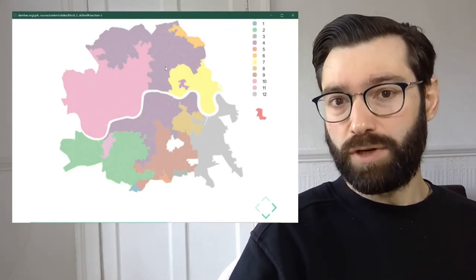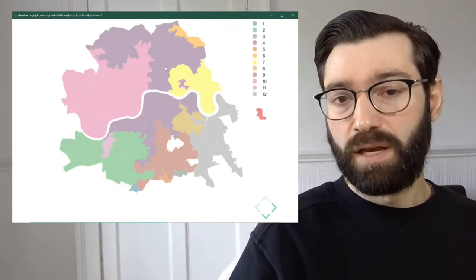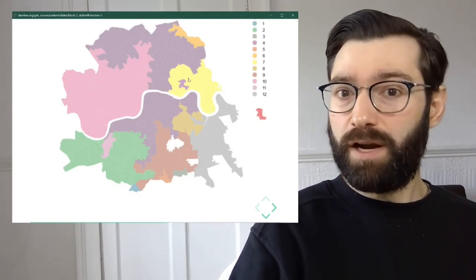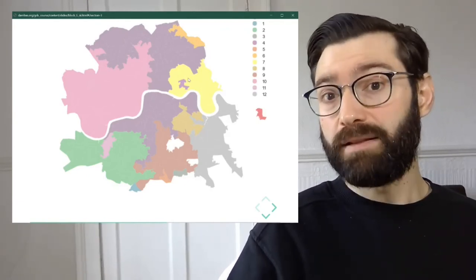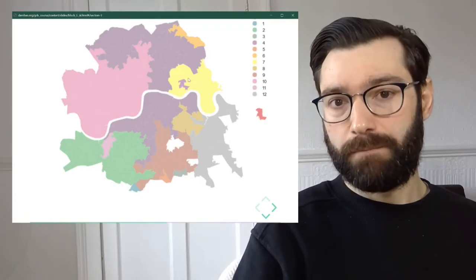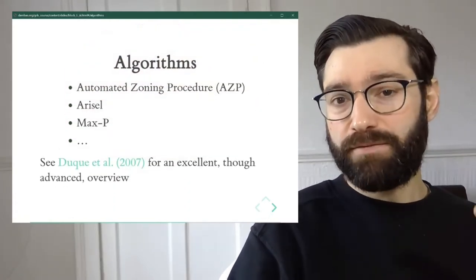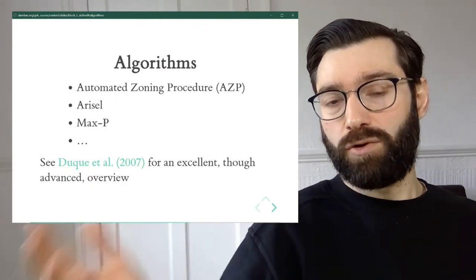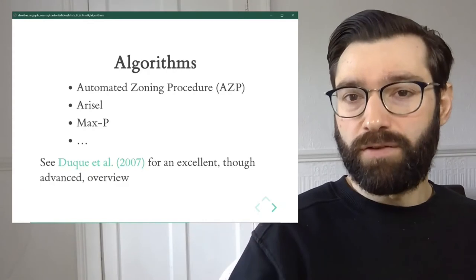It is only because the regionalization algorithm imposes this constraint that the final map looks more like a zoning. In some cases, regionalization algorithms are also called zoning algorithms, and it is because they create zones of areas that are contiguous and statistically similar.